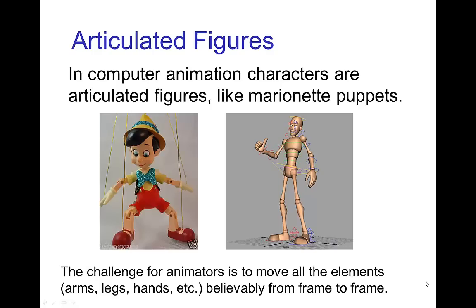Joints. In computer animation, the motion of characters is similar to positioning puppets in that they are articulated figures with movable joints, and so just posing the characters frame by frame gives you the motion of the character.